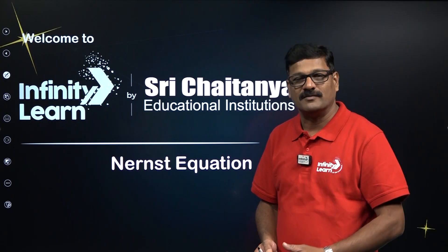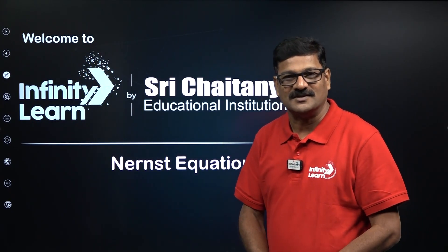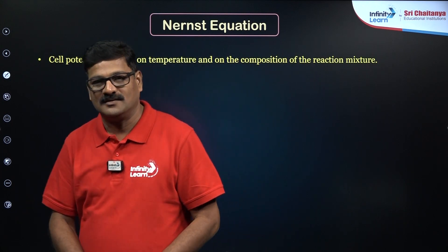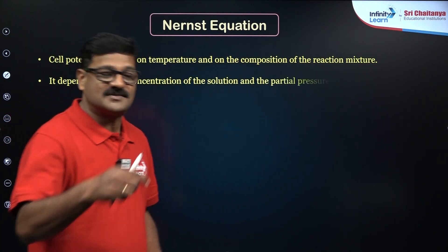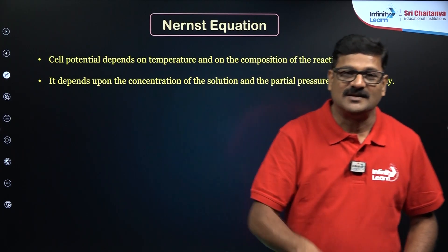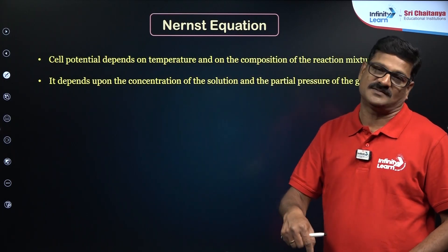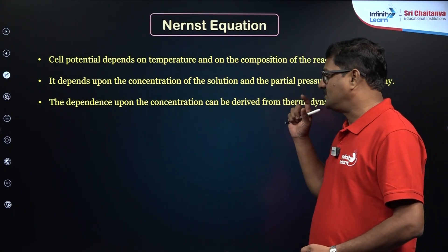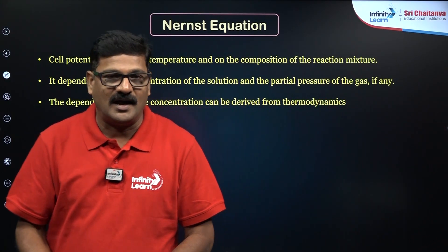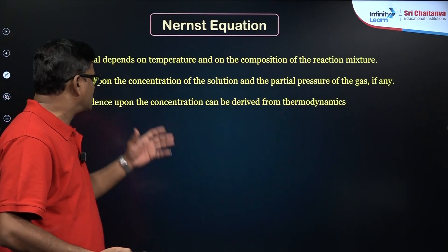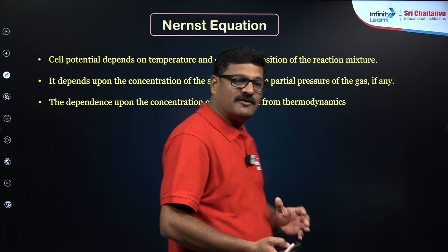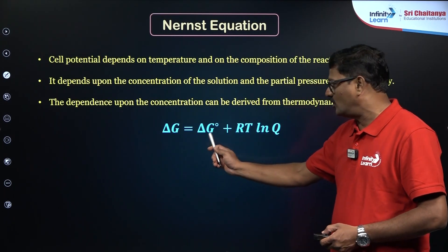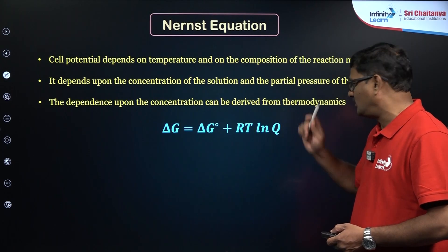Cell potential depends on temperature, but also on the concentration of the electrolyte, or if any gaseous substances are present, the pressure also plays a role in determining cell potential. The dependence upon concentration can be derived from thermodynamics; it is given as ΔG = ΔG° + RT ln Q.